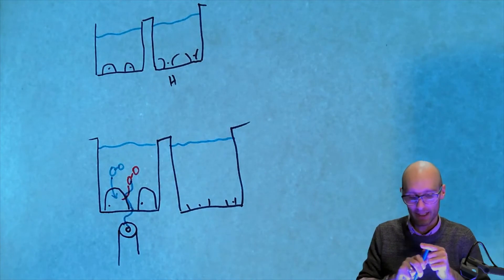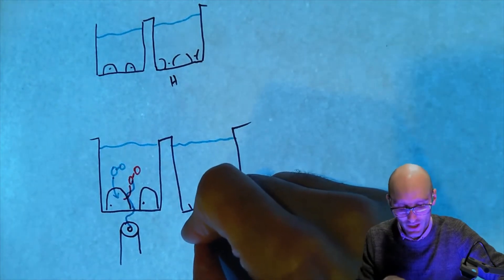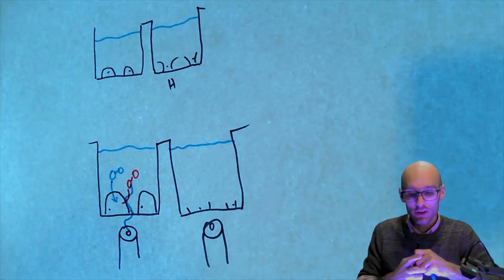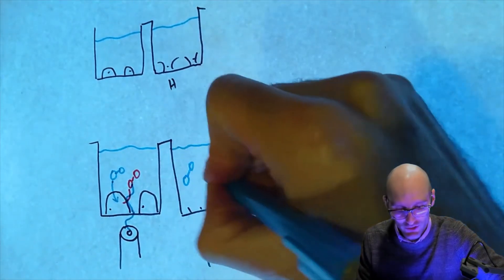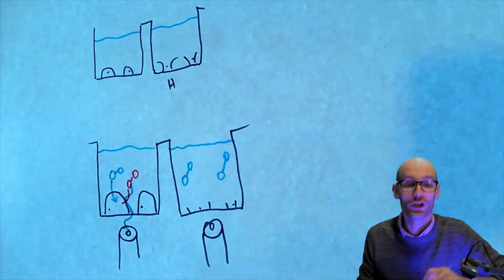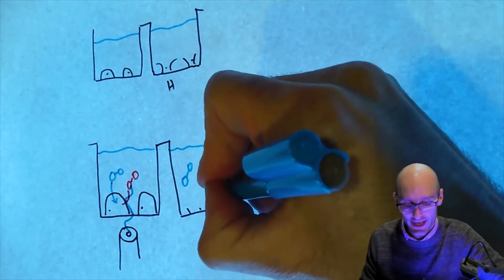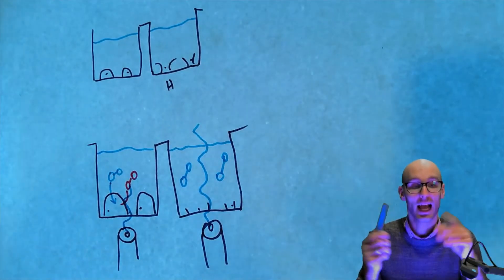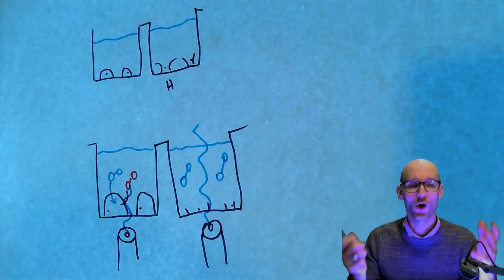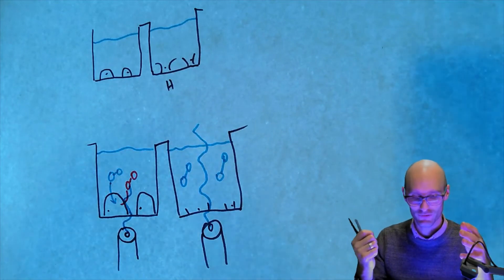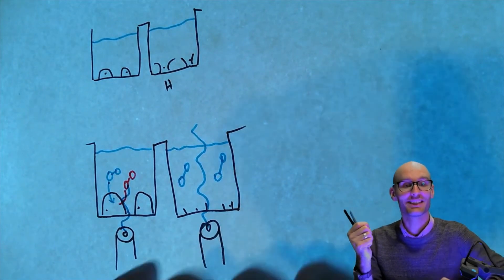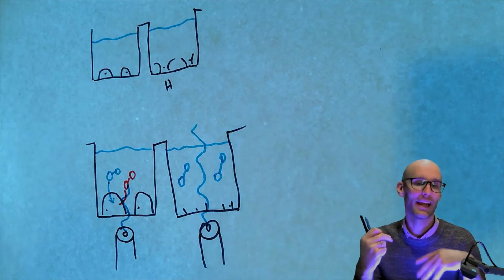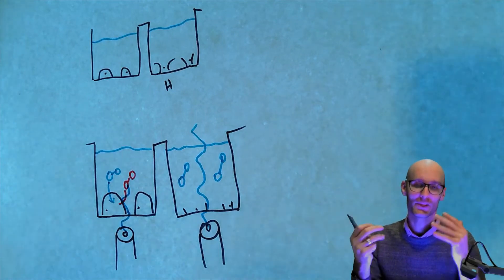But on this side, on this side of the resazurin assay, because there are no living cells in there, none of the blue resazurin was converted to that red product. And so, the blue light can just go straight through. Remember? Remember that light, the color that you see is the result of the non-absorbed wavelengths. So, if the liquid is blue, it's because it doesn't absorb blue light. Blue light goes straight through and we can see it. Whereas red light gets completely absorbed and that's why we can't see it.